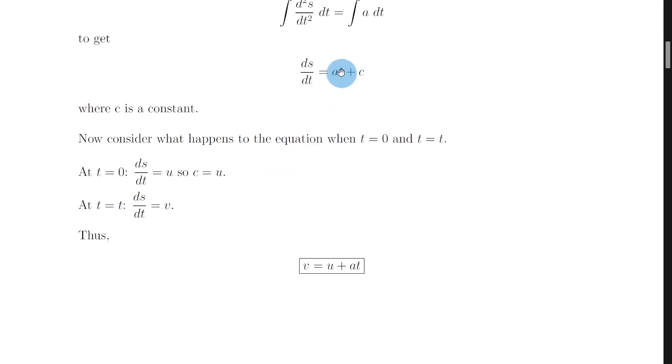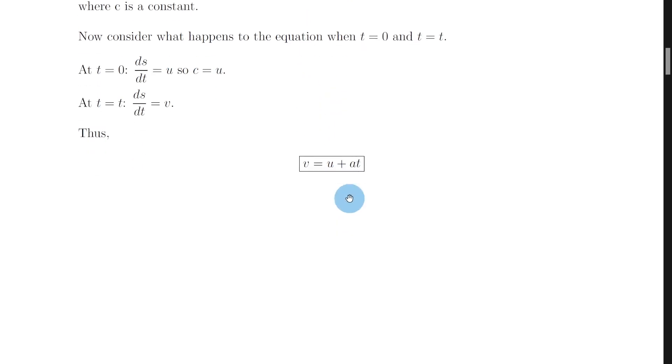So when we plug t equals t in here, it just stays the same. So we end up with when t equals t, ds by dt will equal v. So right now we've got v is equal to at plus u because we said that c is equal to u. And then just swapping these two terms around, we end up with our first equation of motion, v equals u plus at.